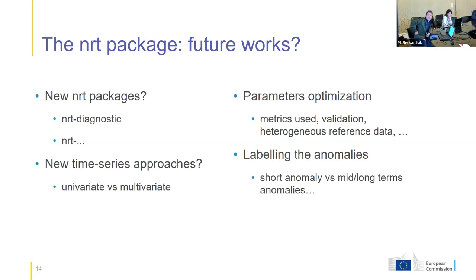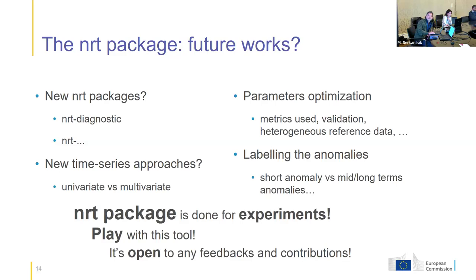For future work, we are thinking about new packages, or maybe making a fusion of all the packages into one — that's still in discussion. We are also wondering whether to work only on univariate time series or to introduce multivariate time series. There are also questions about parameter optimization. And finally, can we label the anomalies? Because for now, NRT detects anomalies but does not say if it's a bark beetle attack, a drought, or anything else. The NRT package is designed for experiments, so I invite you to play with this tool — we are open to feedback and contributions.